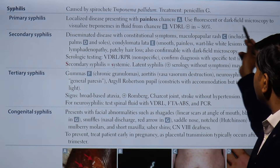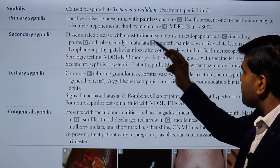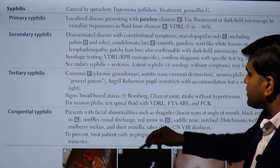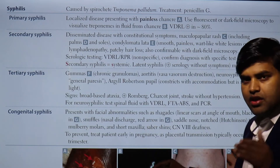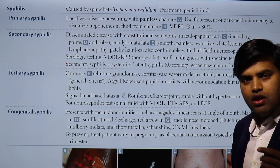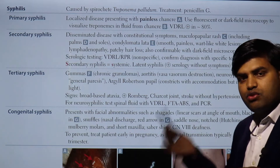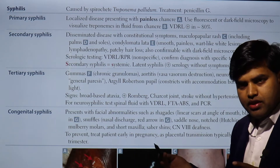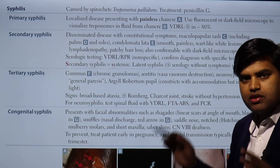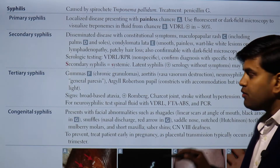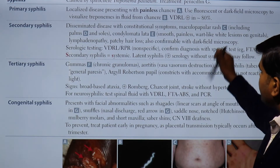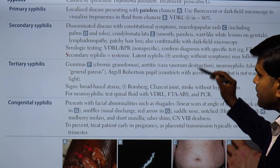Use fluorescence or dark field microscopy to visualize Treponema in the fluid from the chancre. Do not confuse the chancre with chancroid, which is a painful ulcer caused by Haemophilus ducreyi — we will discuss that later. Syphilis gives a painless ulcer, and VDRL will be positive as a non-specific test.